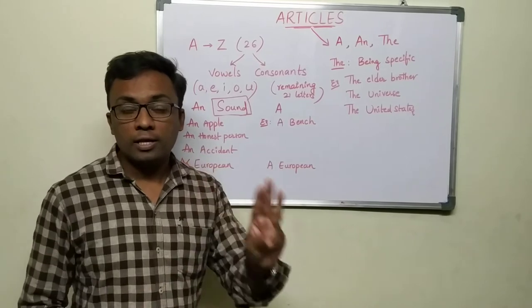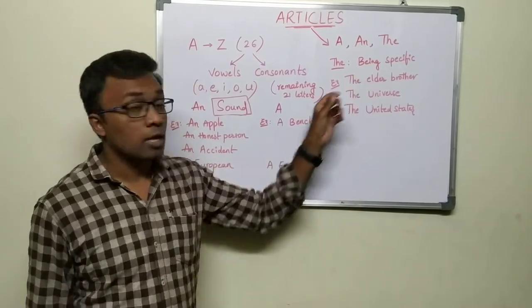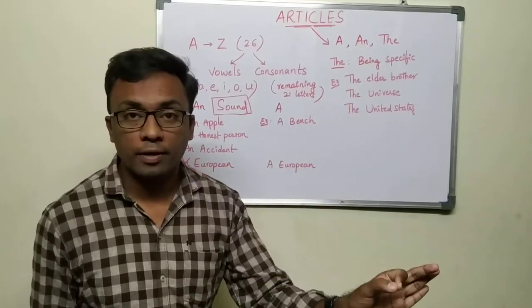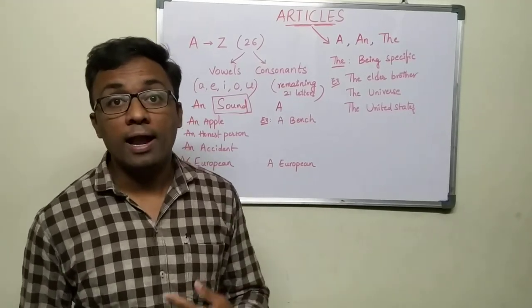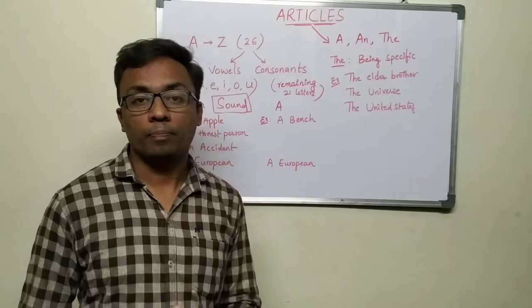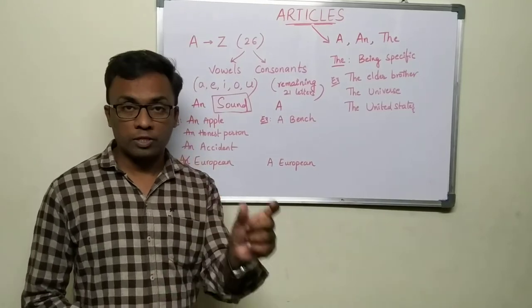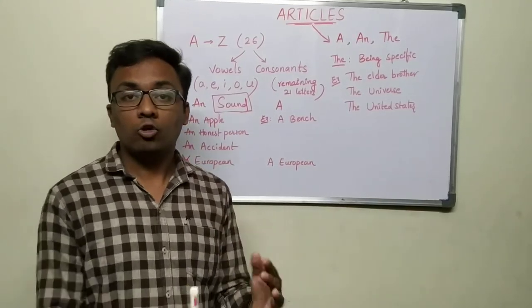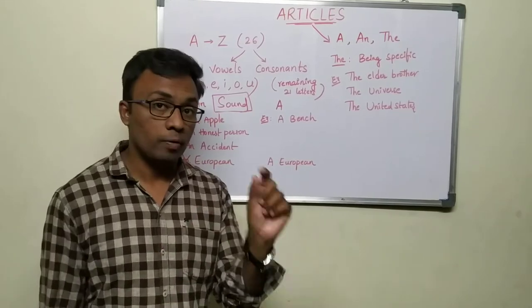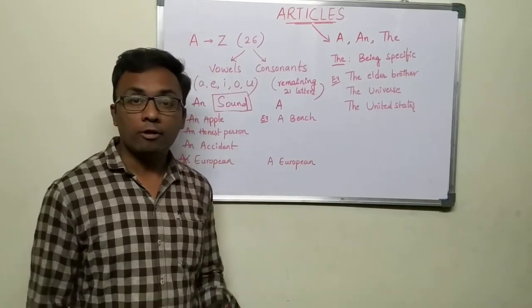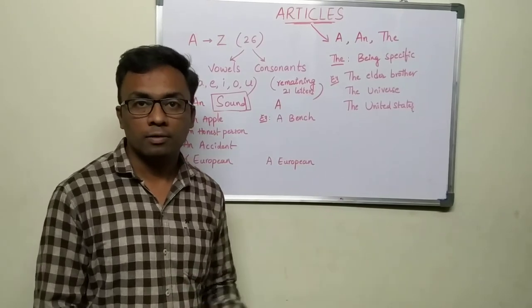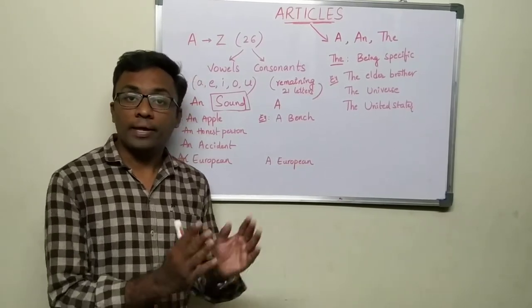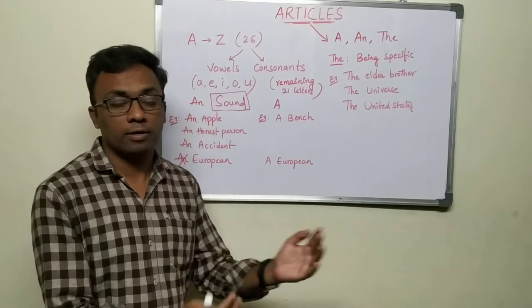We use 'the' for three aspects. First is being specific: 'I am the elder brother in the home' - you're being specific. 'It is the last bus available to my town' - being specific. Second, to show unique things like the universe, the sun, the moon.